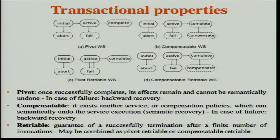We have another property called compensatable. For compensatable services, the service provider offers another service or compensation policies to allow semantic recovery. And in case of failure, like a pivot service, it also allows backward recovery. For example, a service providing a flight ticket that can be cancelled — eventually with an additional cost — can be compensatable. A third property is retriable: it has a maximum guarantee of successful termination, generally achieved using replication mechanisms. This property is generally combined with the two previous ones.